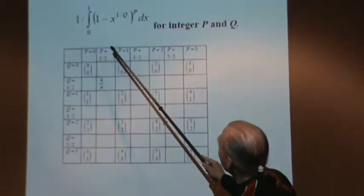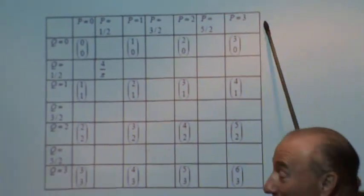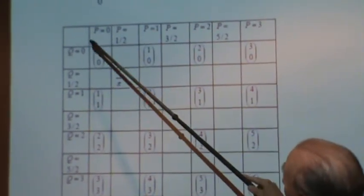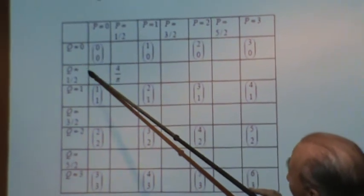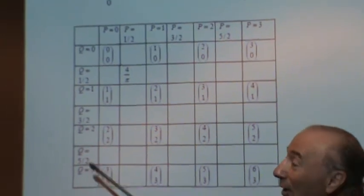Now, here he has p is zero, p is a half, p is one, p is one and a half, p is two, and so on. And then the q, q is zero, q is a half, q is one, three halves, and so on down here. And now he's going to try to fill in the blocks.